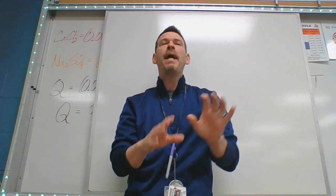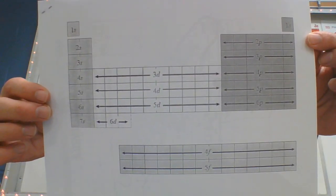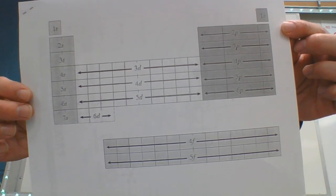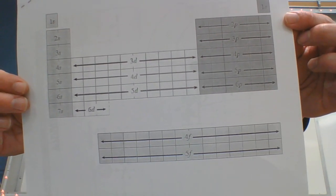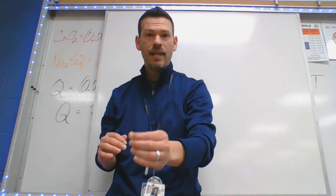Look back at your cheat sheet. How many different letters have a three in front of it? How many different sub levels have an energy level of three? There's s, p, and d.